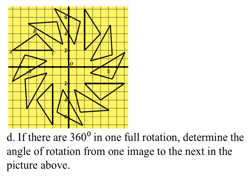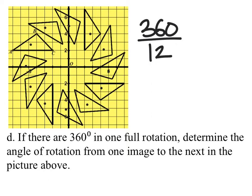Let's just do it. We can see all the images are rotated the same amount from each one to the next. Counting the images: one, two, three, four, five, six, seven, eight, nine, ten, eleven — and there is the twelfth one, which is the pre-image. So we have 360 degrees divided by 12 images, and we get 30 degrees.